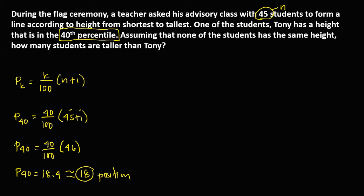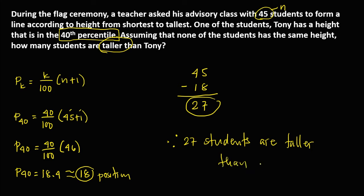Since we want to know how many students are taller than Tony, from the total number of students, we have 45 minus the position of Tony, minus 18. So 45 minus 18, that's 27. Therefore, 27 students are taller than Tony.